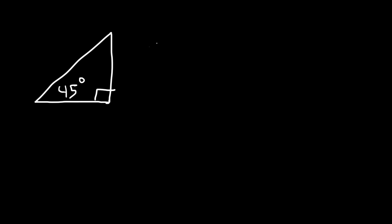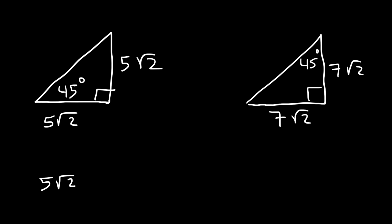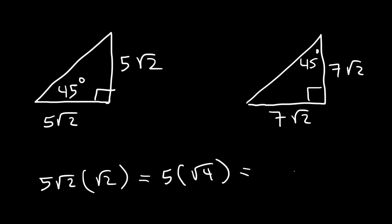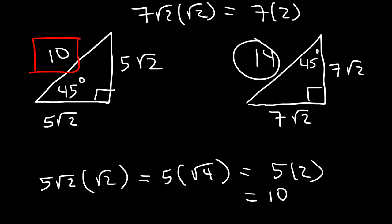Now try these two examples: one triangle has a leg of 5√2 and another has a leg of 7√2. The other missing leg is the same in each case. To find the hypotenuse of the first triangle, multiply 5√2 by √2: √2 × √2 = √4 = 2, and 5 × 2 = 10, so the hypotenuse is 10. For the second triangle, 7√2 × √2 = 7 × 2 = 14.